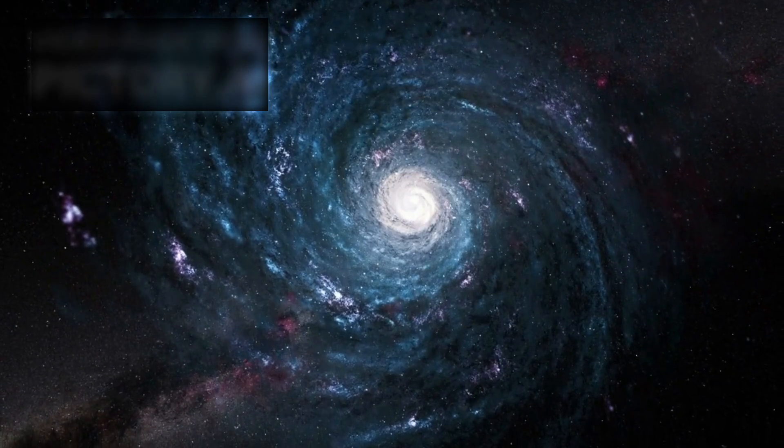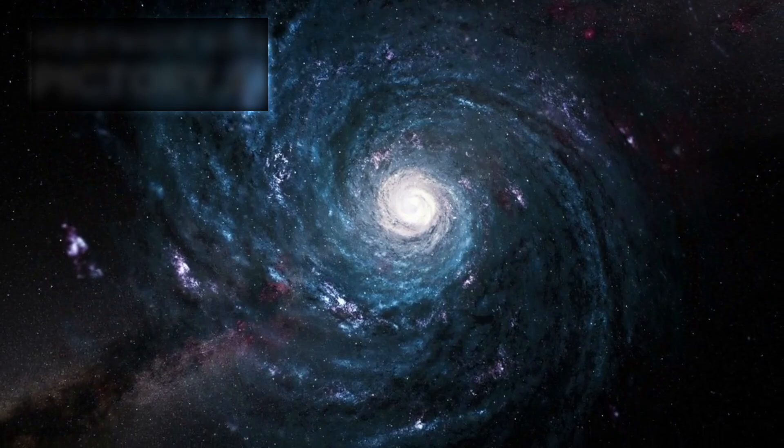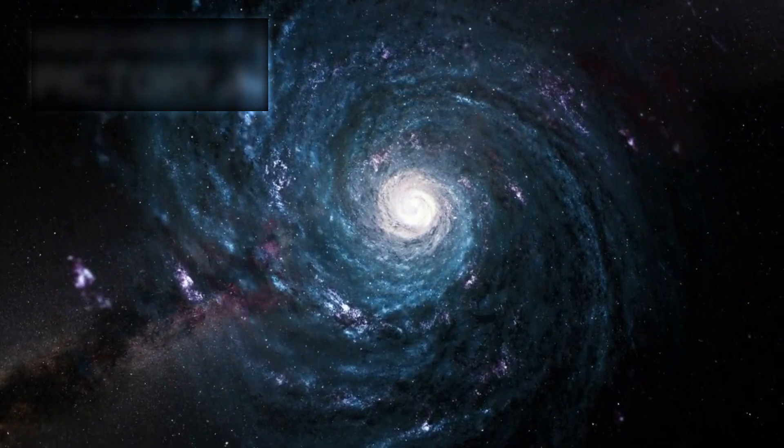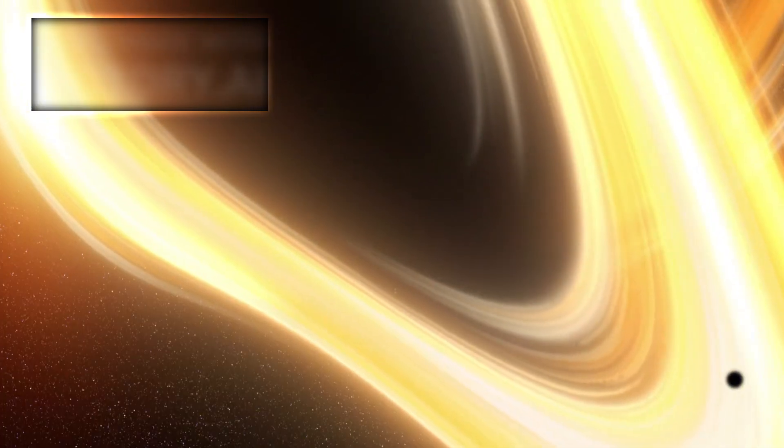This forms what is known as an accretion disk, a brilliant, swirling ring of matter circling the event horizon. The event horizon is the black hole's boundary, the point of no return. Once anything crosses it, escape becomes impossible.